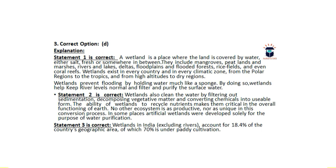The explanation: a wetland is a place where land is covered by water — either salt, fresh, or somewhere in between. It is not necessary that a wetland comprise all three components. Wetlands include mangroves, peatlands, marshes, rivers, lakes, deltas, floodplains, flooded forests, rice fields, and even coral reefs. Wetlands exist in every country and climatic zone, from polar regions to the tropics and from high altitudes to dry regions.